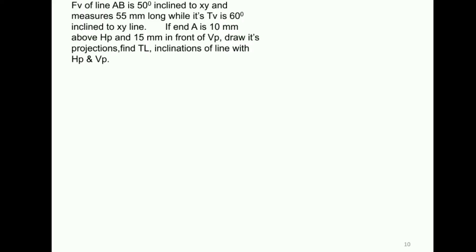Here we have a third problem. The front view of line AB is 50 degrees inclined to XY and measures 55mm long. The front view inclination means alpha is 50 degrees and the length of the front view — A-dash to B-dash — is 55mm. While the top view is 60 degrees inclined to XY, so beta is 60 degrees. Point A is 10mm above HP and 50mm in front of VP. Draw its projection and find true length and inclinations with HP and VP.